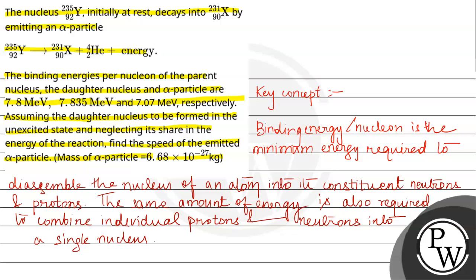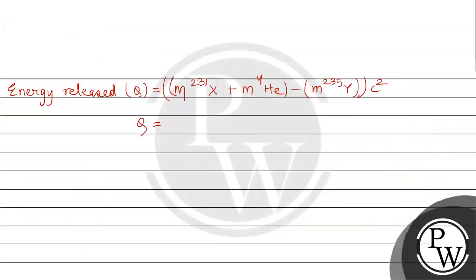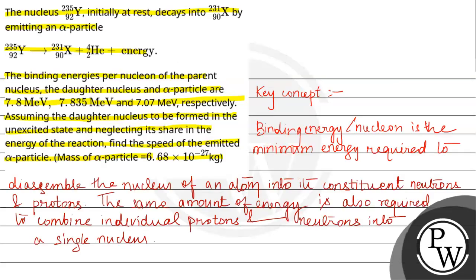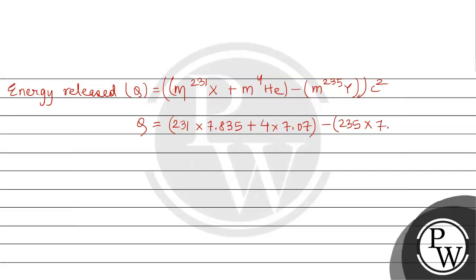This will be 231 × 7.835 plus 4 × 7.07 minus 235 × 7.8, multiplied by c squared, which we take as 931.5 MeV.